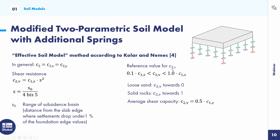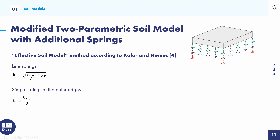There are reference values: C2, the shear resistance, should be between 0.1 times and 1 times the modulus of subgrade reaction. If there is an average shear, the shear resistance is half of the modulus of subgrade reaction. It is easy to calculate the line springs according to the formula and the single springs at the outer edges.